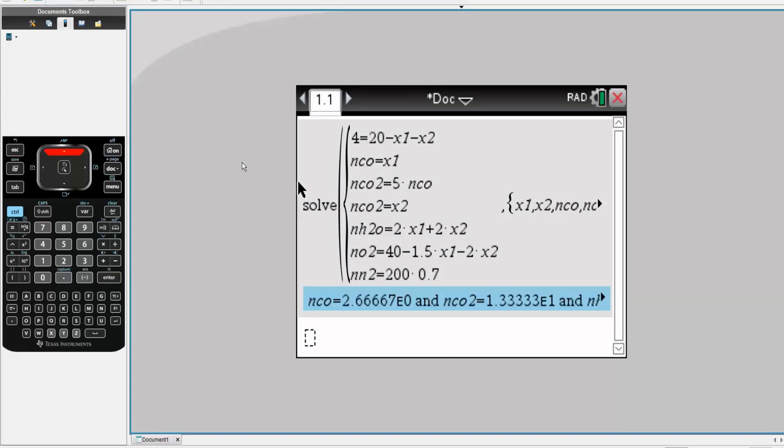So CO was 2.667, CO2 was 13.333. If you notice, 2.667 times five is this number, which is correct. Then we have extent of reaction one was 2.667, extent of reaction two was 13.333.